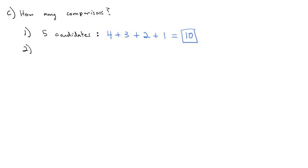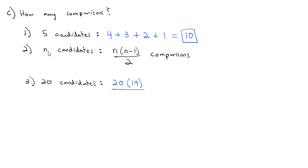And as it turns out, we can actually generate a formula if we have n candidates. We can use the formula that n times n minus 1 divided by 2 tells you the number of comparisons that will be needed for that many candidates. So, for example, if there were 20 candidates, we would take those 20 candidates times 1 less than 20, which is 19, divide by 2, and we would end up with 190 comparisons that would be required for 20 candidates to run through Copeland's method.